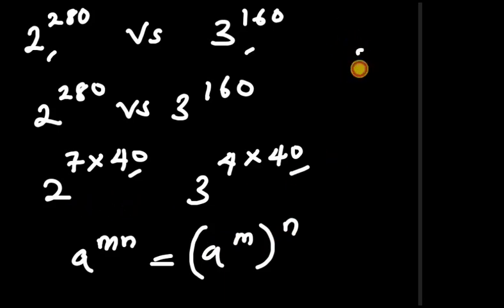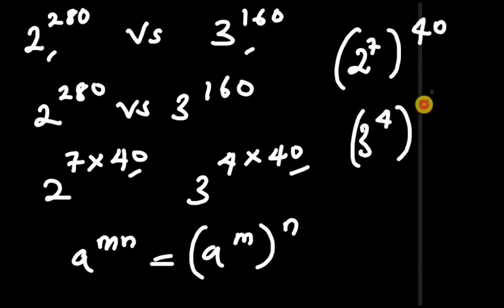We can write this as (2 to the power of 7) to the power of 40, and similarly (3 to the power of 4) to the power of 40.